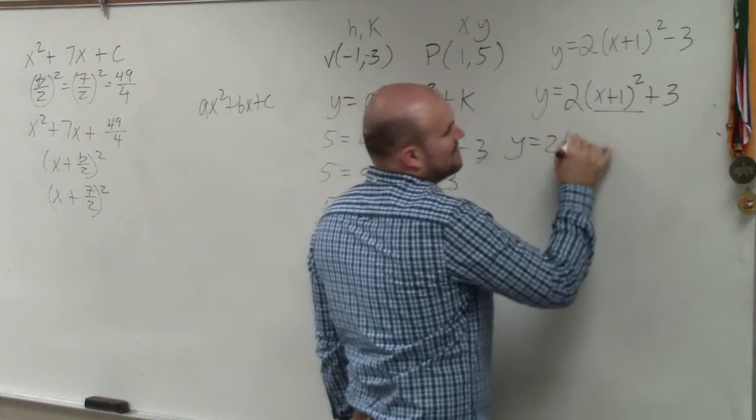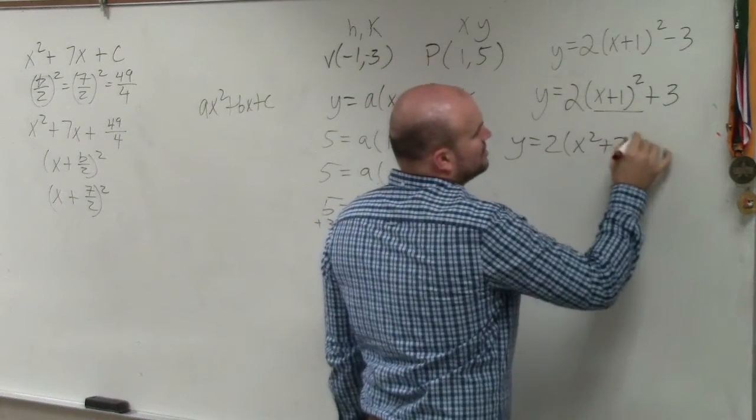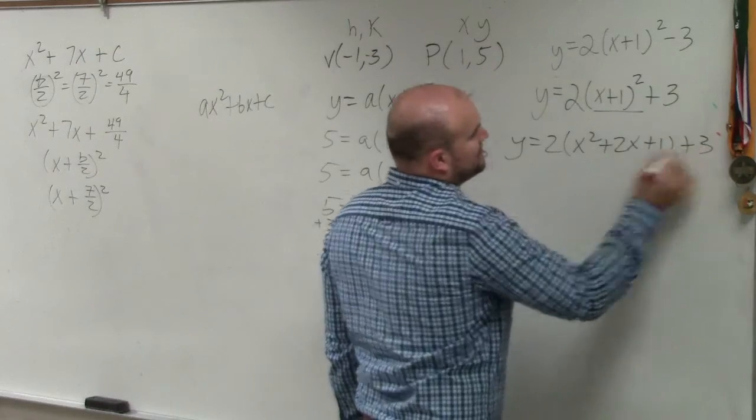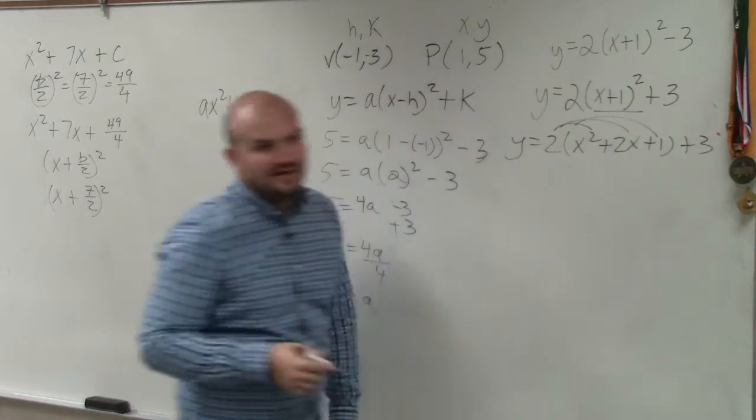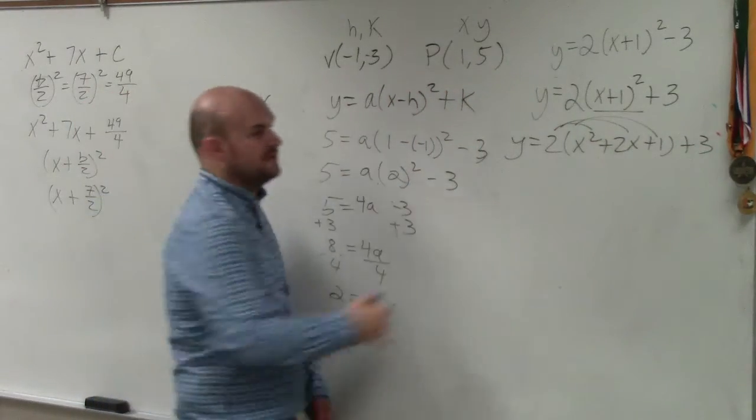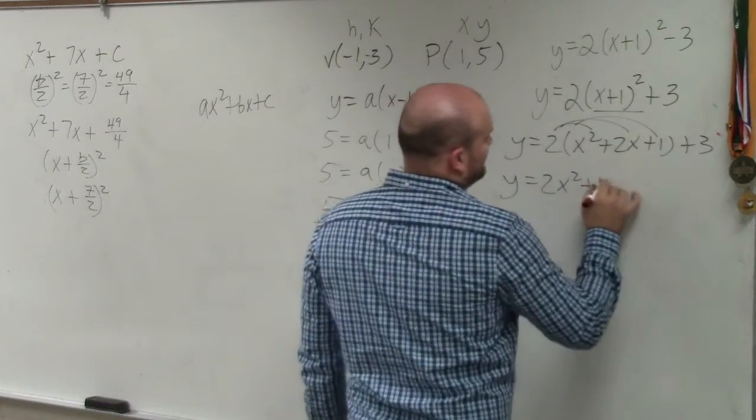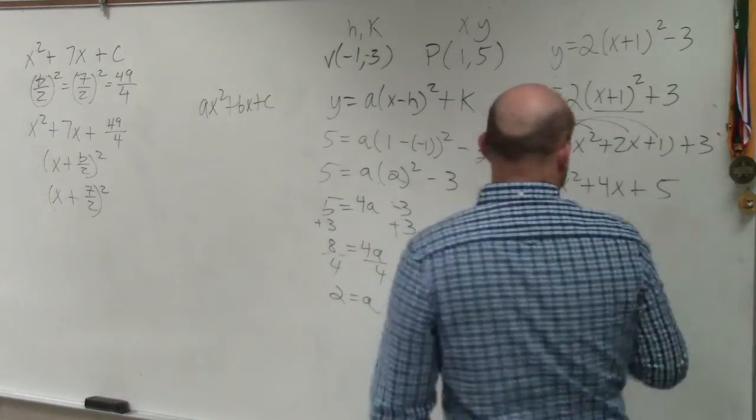So if I was going to write this in standard form, I would have to expand this. So it would be y equals 2 times x squared plus 2x plus 1 plus 3. Then I'd have to apply distributive property and add the 3. So y would equal 2x squared plus 4x plus 5.